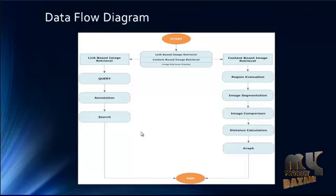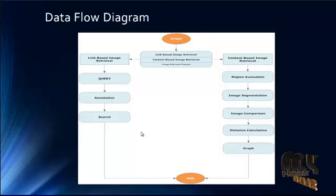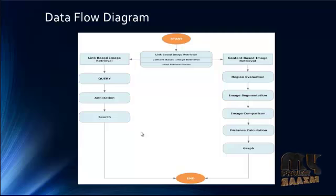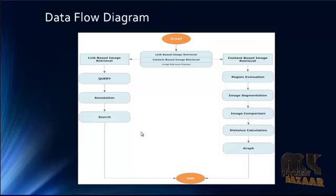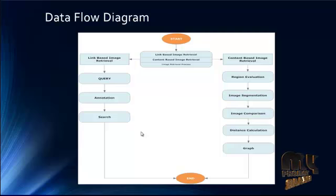This is the data flow diagram of our project. As mentioned, image retrieval is carried out by two methods: one is link-based image retrieval and another is content-based image retrieval. For link-based image retrieval, the process is carried out by annotation. The user needs to provide a query for which the images need to be retrieved from the database. It will be processed for annotation, then we can identify the object present in the query and annotate it to retrieve the images from the database. After image retrieval, we group the images by means of annotation keywords and retrieve the group of images for the query given by the user.